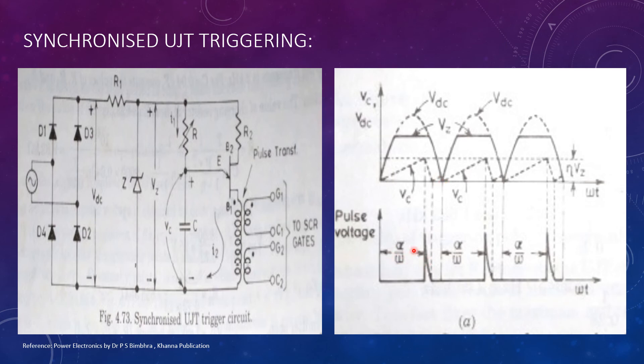Thus, the time t equals alpha divided by omega, when the pulse is applied to the SCR for the first time, will remain constant for the same value of R. Small variations in supply voltage and frequency are not going to affect circuit operation.